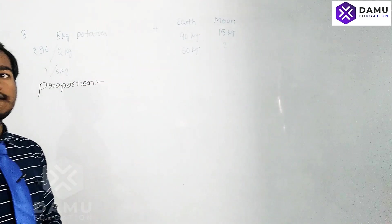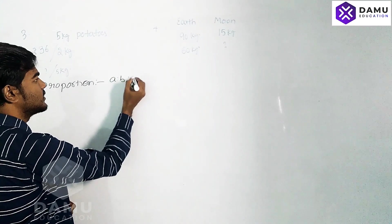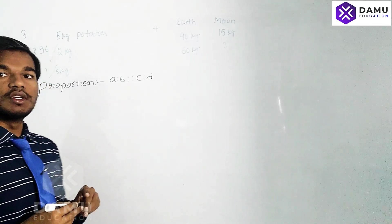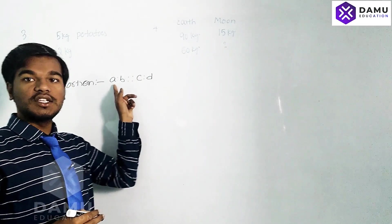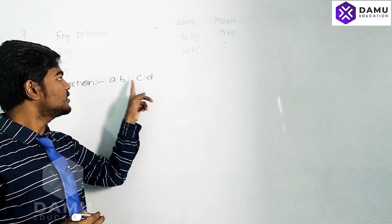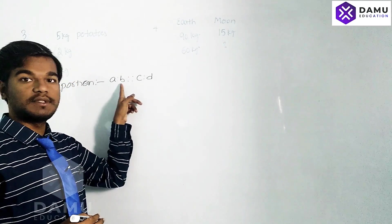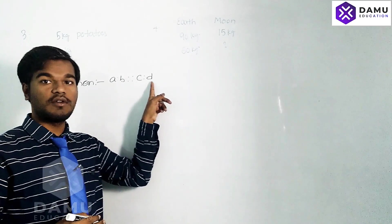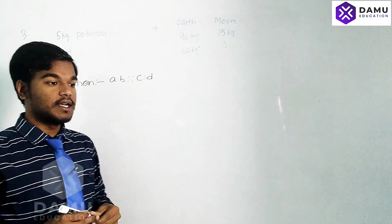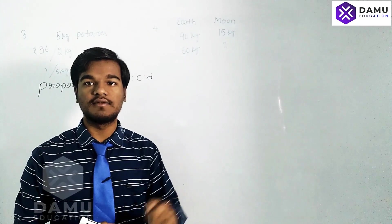For the proportion method, first of all we have to write: a is to b is as c is to d. So here, if you take any item, a, the related quantity will be written as c. If you take any item b, it will be written in the format of d. So let's take number of kilograms and cost.